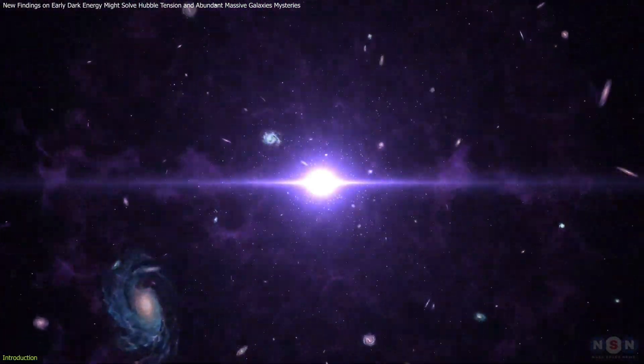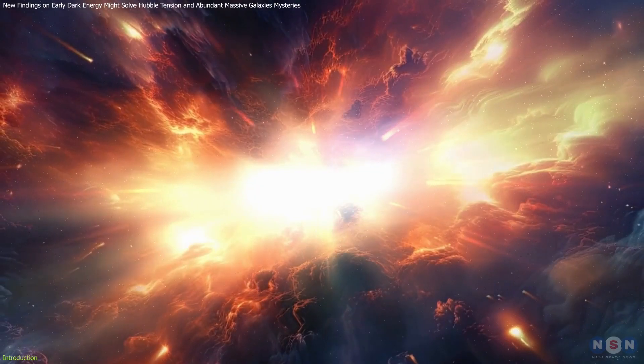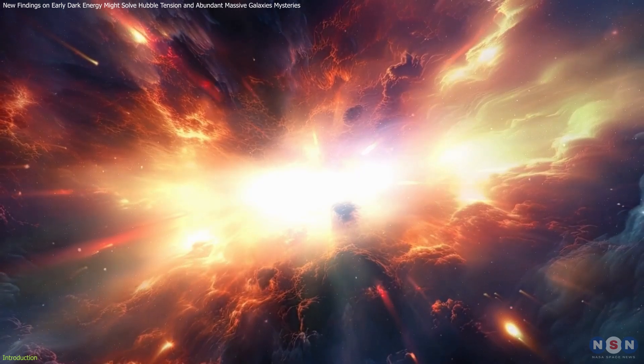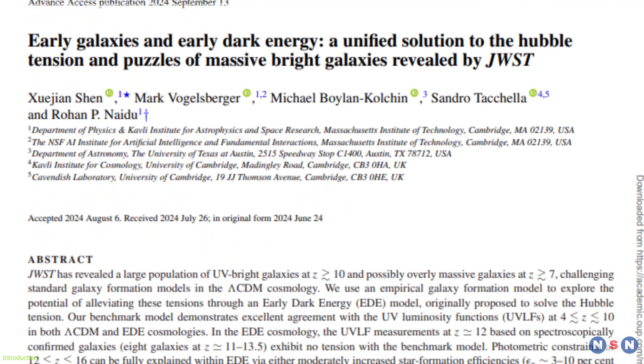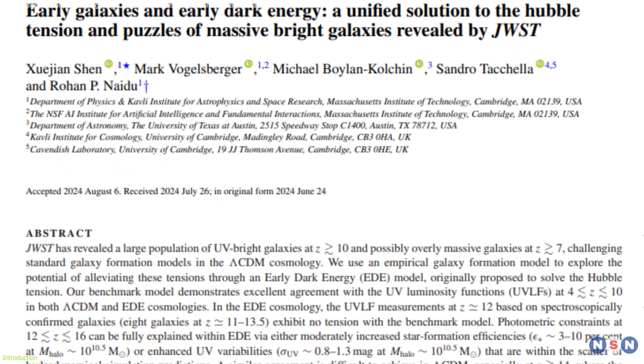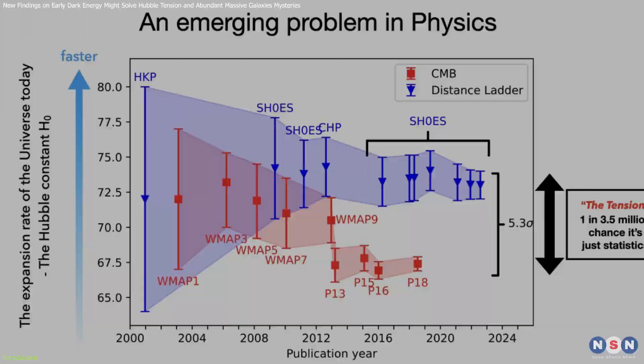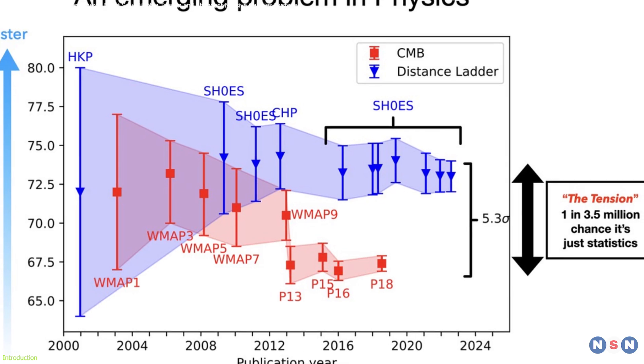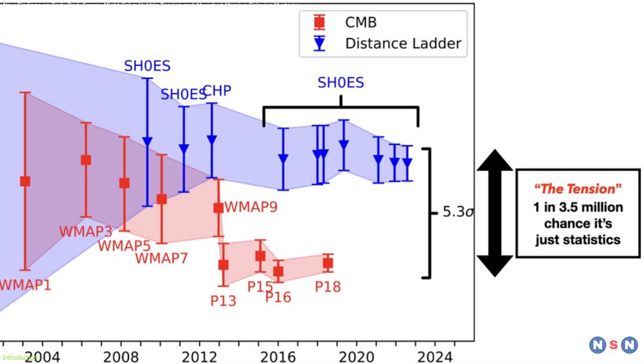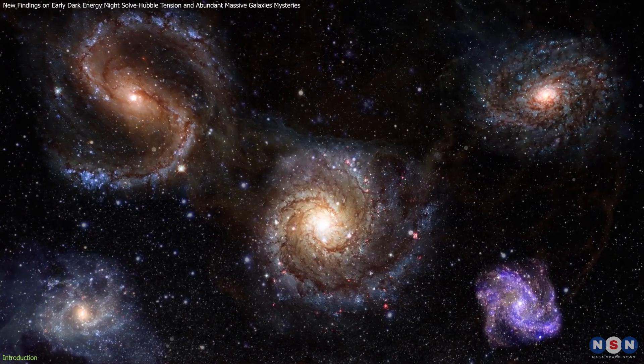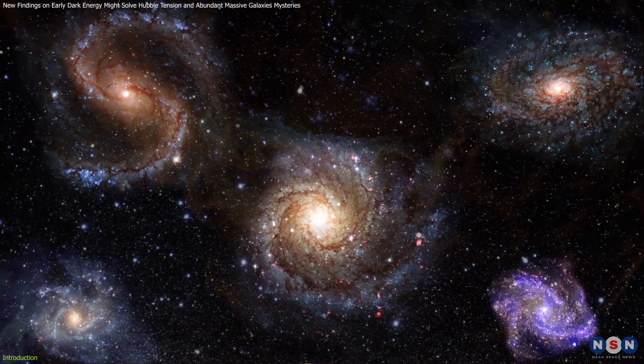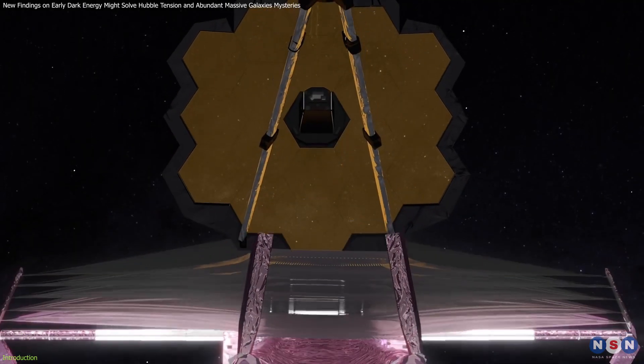What if a mysterious force that existed only in the earliest moments of the universe could solve two of the most confusing puzzles in cosmology? That's precisely what scientists from MIT are exploring with the concept of early dark energy. This concept could not only resolve the Hubble tension, a conflict over the universe's expansion rate, but also explain the unexpected discovery of numerous bright galaxies in the early universe by the James Webb Space Telescope.